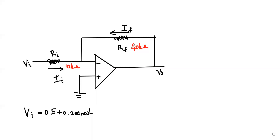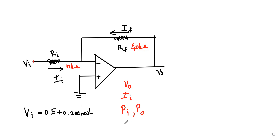Now let's look at a question. Here we have Rf as 40 kilo-ohms and Ri as 10 kilo-ohms. The input signal is 0.5 plus 0.2 sin(ωt). You need to find: the output voltage, the input current, the input power, the output power, and finally the power amplification. Please pause the video and try it on your own first.